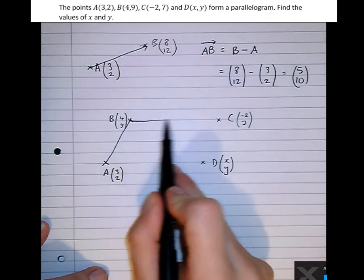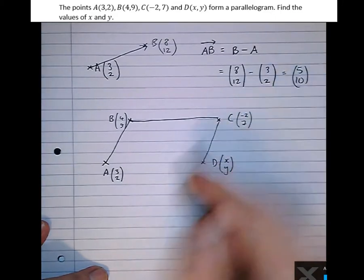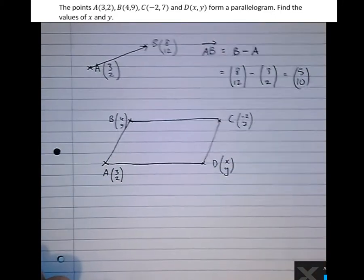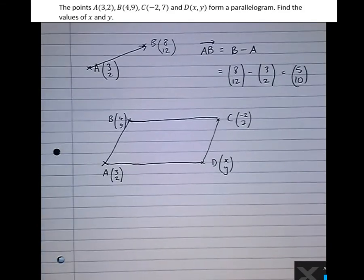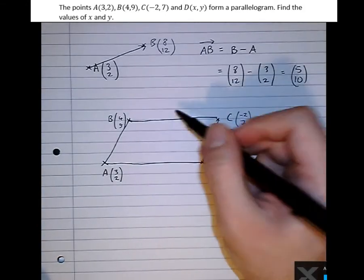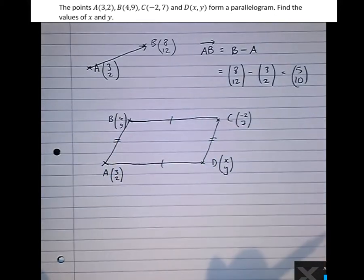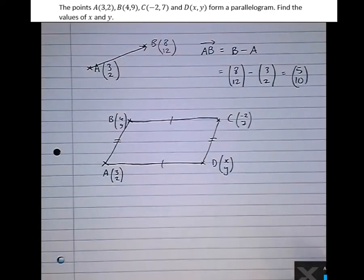Let's make this look vaguely like a parallelogram. Now a parallelogram is defined as being any shape that has two pairs of parallel sides. So here's a parallel pair of sides here, and here's a parallel pair of sides here. Okay, so how can we use this fact to find the coordinates or the position vector of D?